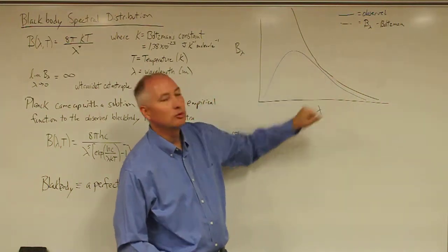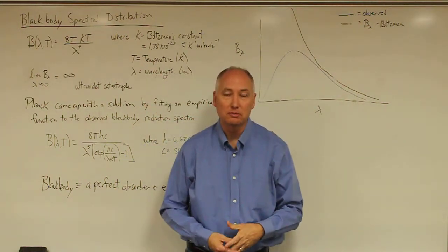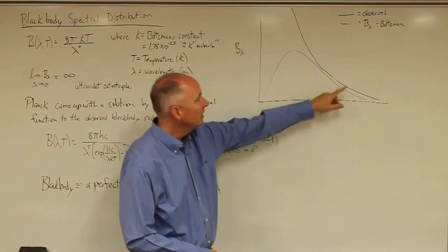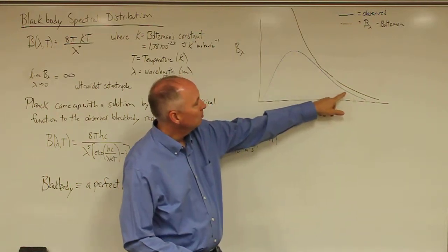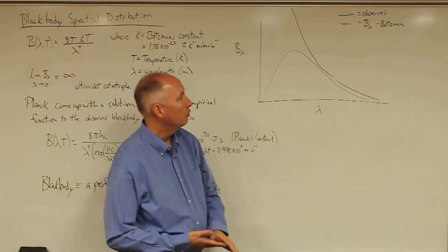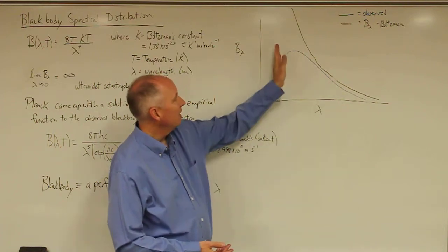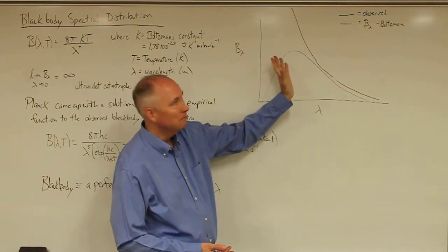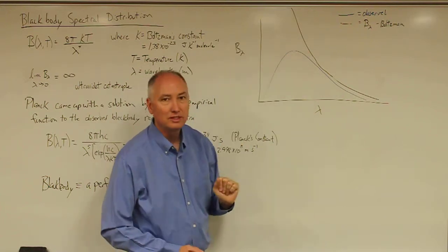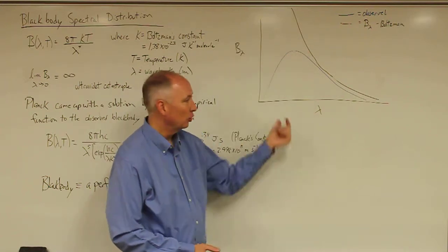It's clearly not what was actually observed when measurements started to be taken of blackbody radiation distribution. The blue line is the actual observed spectra for a blackbody object, and so we have a very strong disconnect between the Boltzmann distribution and the observed data at short wavelengths.